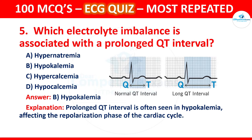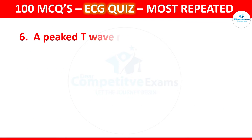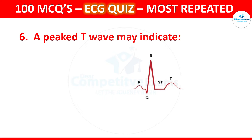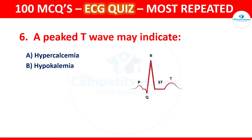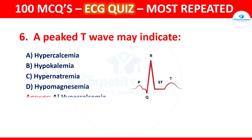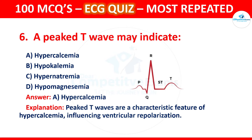Question 6: What does a peaked T wave indicate? Options are hypercalcemia, hypocalcemia, or hypokalemia. The correct answer is hypercalcemia. Peaked T waves are a characteristic feature of hypercalcemia, influencing the ventricular repolarization.